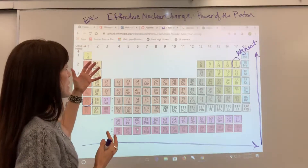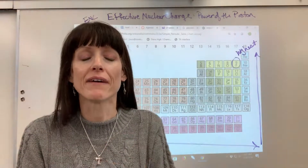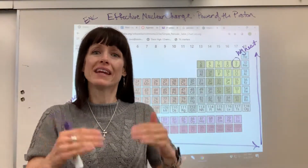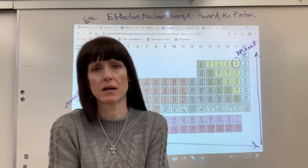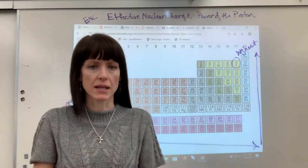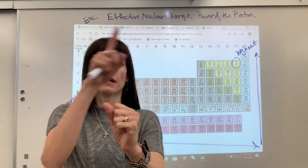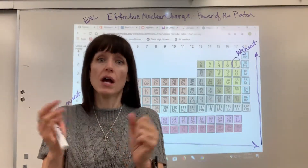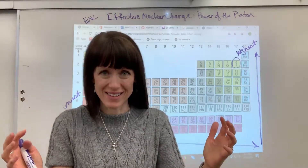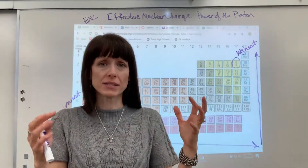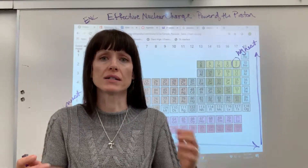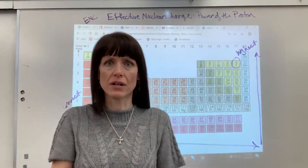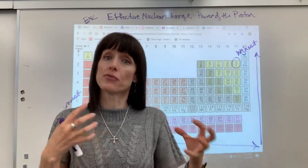When we talk about effective nuclear charge, we're dealing with valence electrons. Everything other than the valence electrons are your core electrons. They shield the valence electrons from the full impact and power of the protons. So you've got your nucleus, each consecutive energy level subshell is filled, and then you get that outermost energy level — the valence electrons. Those core electrons shield that outermost energy level from the full power of the protons.